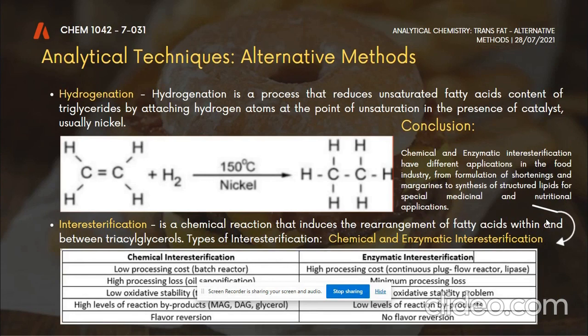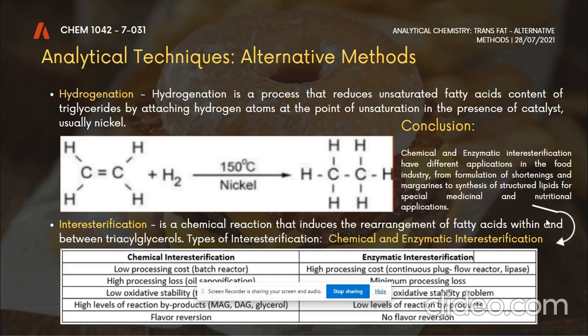Now I'm going to discuss the analytical techniques used in this case study. First is hydrogenation — a process that reduces unsaturated fatty acid content of triglycerides by attaching hydrogen atoms at the point of unsaturation using a catalyst, usually nickel. The next is interesterification, a chemical reaction that induces the rearrangement of fatty acids within and between triglycerides. Types of interesterification include chemical and enzymatic interesterification. These have different applications in the food industry, from formulation of shortenings and margarines to synthesis of structured lipids for special medical and nutritional applications.